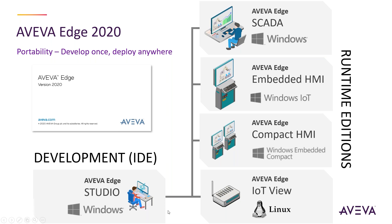The same development environment can be used to create applications for Windows, Windows IoT, Windows CE, or even Linux — same tools, same applications, same interfaces. The runtime for Windows Desktop and Windows Server, like Windows 10, 2016 Server, and 2019 Server, is called Aviva Edge SCADA.